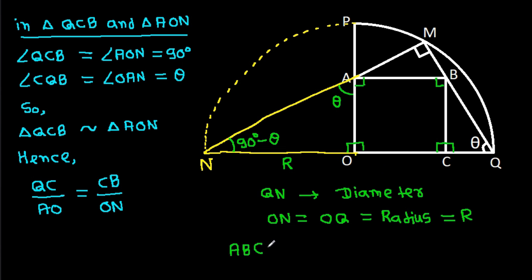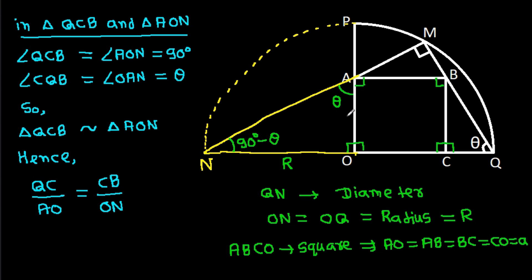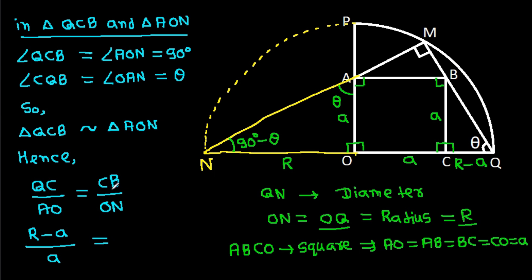We know that ABCO is a square, so AO equals AB equals BC equals CO. Suppose each side is A. Since OQ is R and CO is A, then CQ will be R minus A. So QC over AO gives (R minus A) over A, equal to CB over ON, which is A over R.